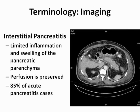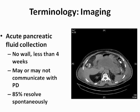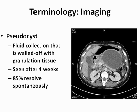On to terminology. Imaging is very useful to help categorize different types of pancreatitis. The first CT scan illustrates interstitial pancreatitis, where the pancreatic parenchyma is swollen and inflamed with some periparenchymal stranding; perfusion is clearly preserved, and this is seen in 85% of pancreatic cases. The next CT scan shows an acute pancreatic fluid collection — there is no wall surrounding the fluid collection, and these are typically seen under 2 weeks from onset of maximal symptoms. This fluid collection may or may not communicate with the pancreatic duct, and 85% of these will resolve spontaneously.